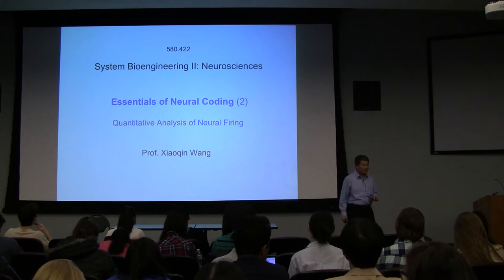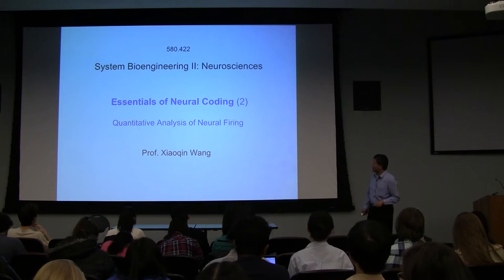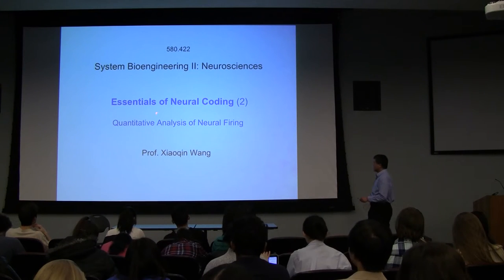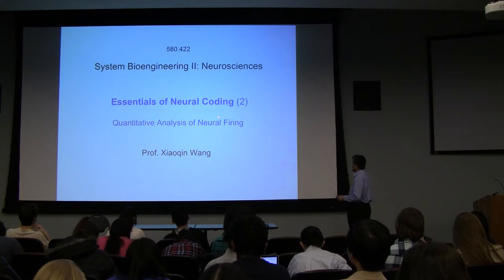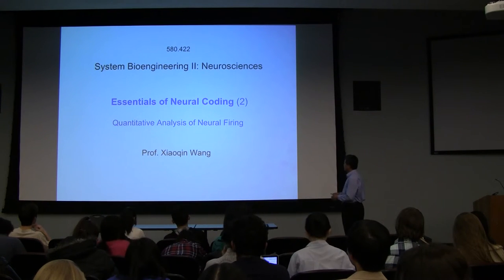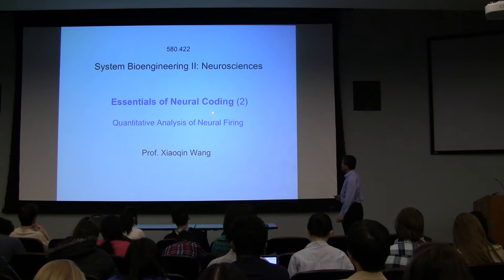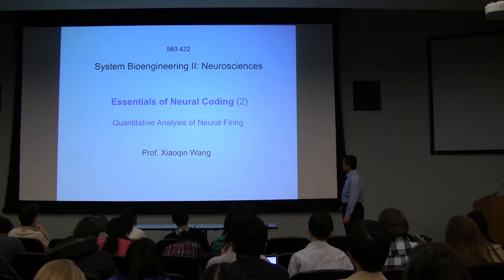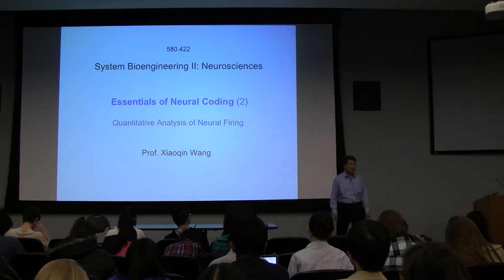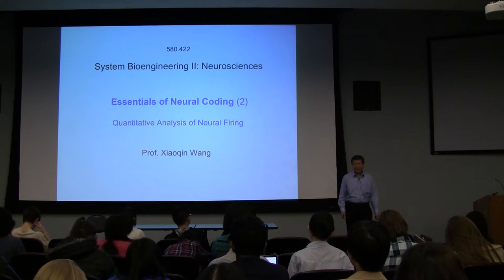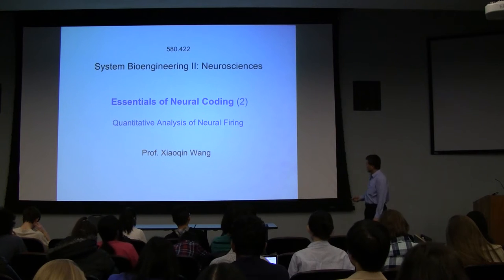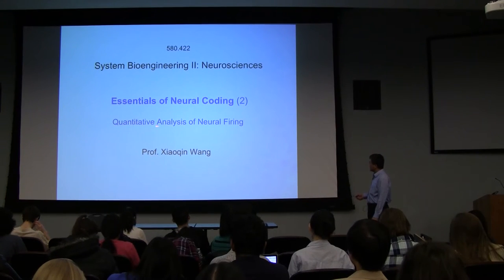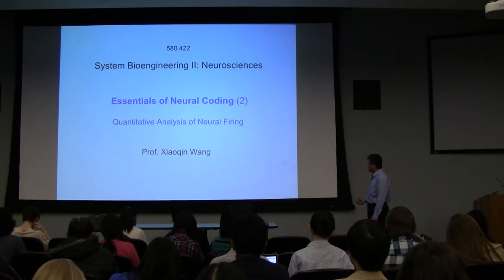Today I'll talk about the second part of what I call the essentials of neuron coding. Last time on Monday, we talked about the concept of reciprocal field. Today we'll talk about the quantitative analysis of a neuron firing.